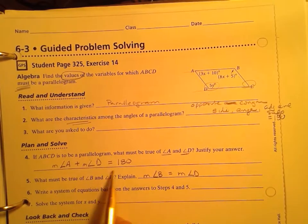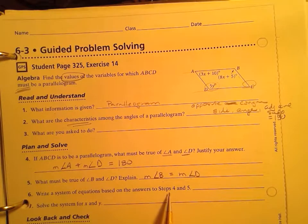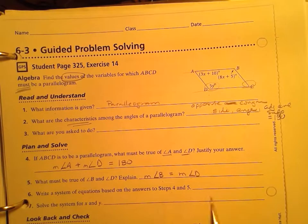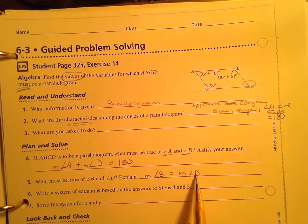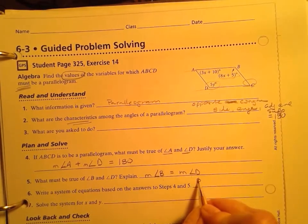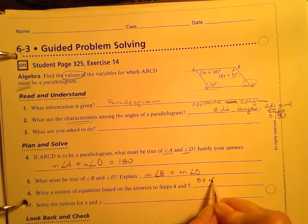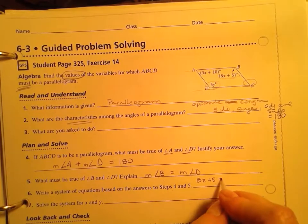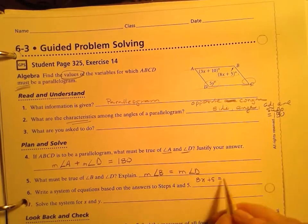So if we know this, what are the equations that we can use? Well, if B is equal to D, that means that 8x plus 5 is equal to 5y.